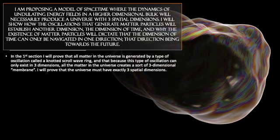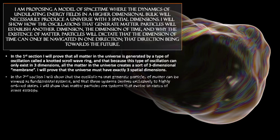I'm going to break this presentation up into three main sections. In the first section, I'm going to prove that all matter in the universe is generated by a type of oscillation called a knotted scroll wave ring. And because this type of oscillation can only exist in three dimensions, all the matter in the universe creates a sort of three-dimensional membrane. Basically, I'm going to prove that the universe must have exactly three spatial dimensions.